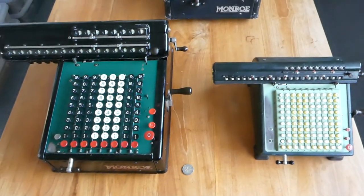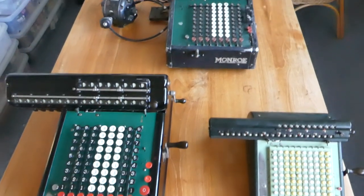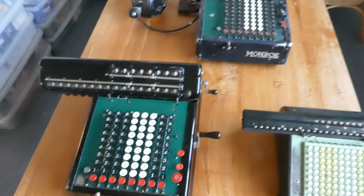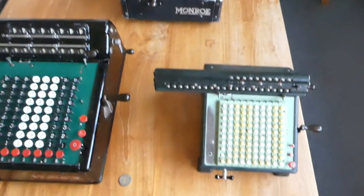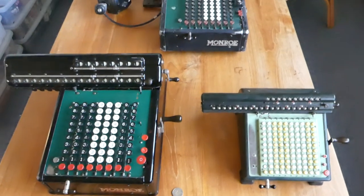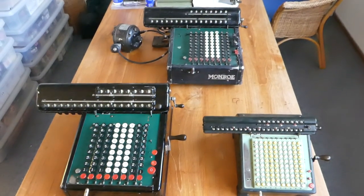And yes, that's about it really. So these are the model K, the model KA, and the model L of the Monroe calculator. Thank you for watching.